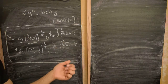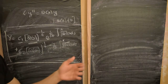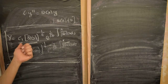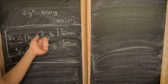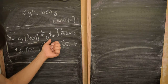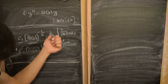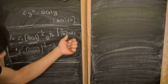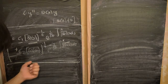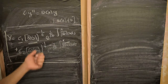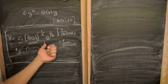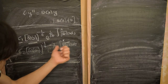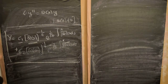We derived a WKB approximate solution to this equation, which reads: y = c₁ · q(x)^(−1/4) · exp(1/√ε · ∫√q(s) ds) plus c₂ · q(x)^(−1/4) · exp(−1/√ε · ∫√q(s) ds), where s is a dummy variable of integration over an interval up to x.